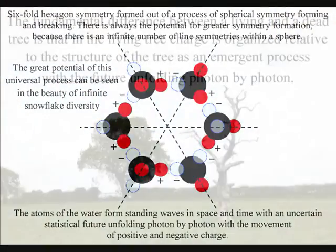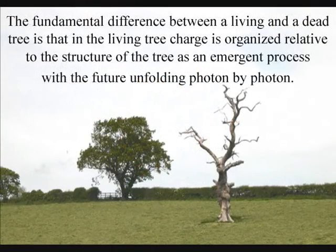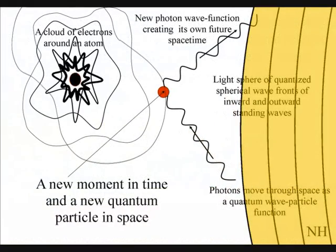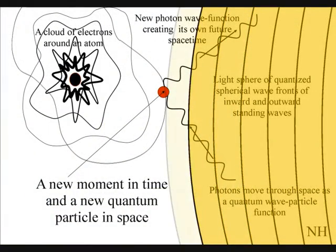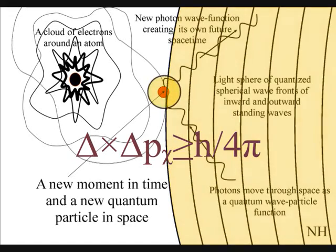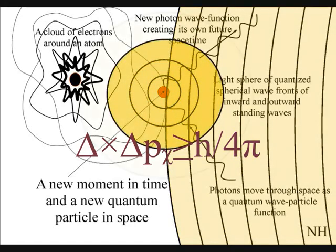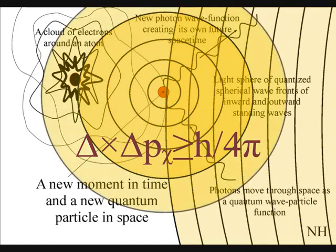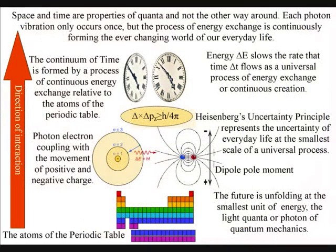If we look at a living tree and a dead tree, the physical difference at the most fundamental level is that in the living tree, charge is organized relative to the structure of the tree as an emergent process with the future unfolding photon by photon. The future growth will be relative to photons interacting with the individual wavelengths of the electromagnetic spectrum of light and bio-photons within the tree as part of a universal process.